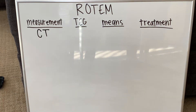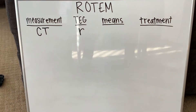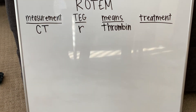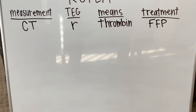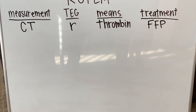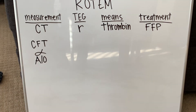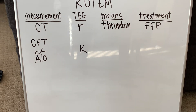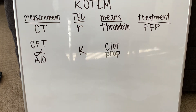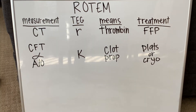The first measurement is clot time on ROTEM, which equals the R value on TEG. That is the time it takes for thrombin generation, and the treatment is FFP, typically 10 to 15 mils per kilogram. The next measurements are a combination: clot formation time, the alpha angle, and the A10 number. That equals the K value on TEG and represents clot propagation time. This is treated with either platelets or cryo, which we'll discuss later.